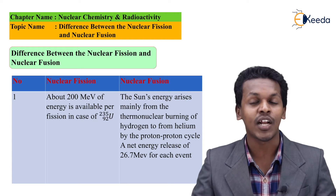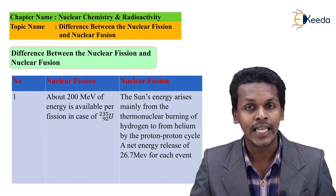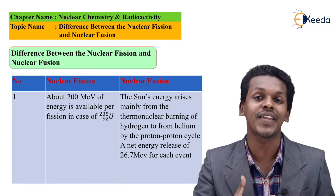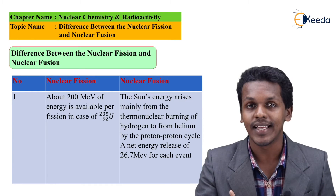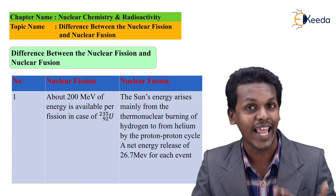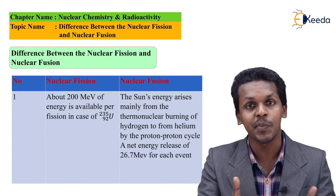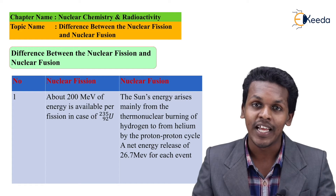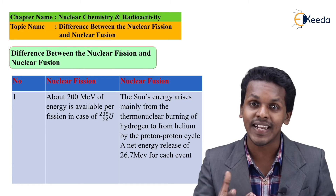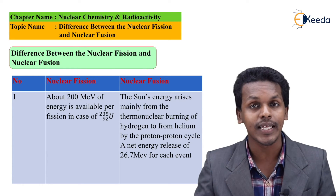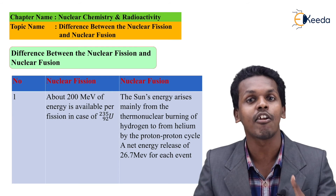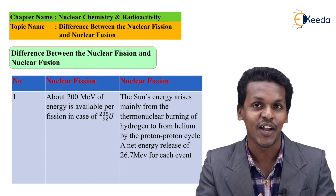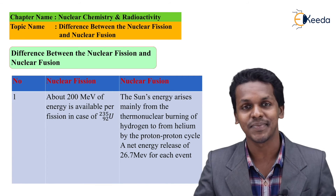Now let me talk about another difference. In nuclear fission, there is a possibility of formation of a new radioisotope or a new element, and the element that has been produced will obviously be unstable and a radioisotope. But talking about the products formed in nuclear fusion, those products are usually non-radioactive. These are the differences between nuclear fission and nuclear fusion.